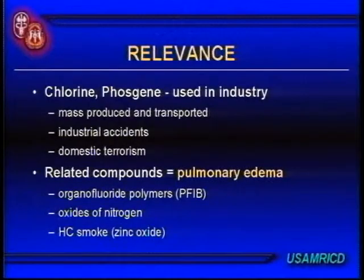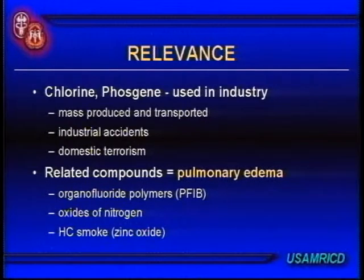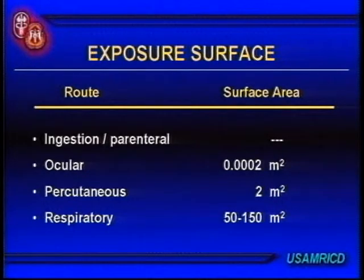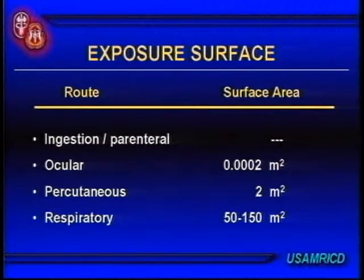We're also going to talk about some related inhalation agents of particular importance to you as military health care professionals, because if you see a toxic inhalation exposure, it will probably more likely be one of these related agents before you see phosgene or chlorine. Remember that if you die from a chemical agent exposure, regardless of which agent, it's going to be a respiratory death. When we're talking about simple surface area available for exposure, the lung is by far the greatest area of exposure.